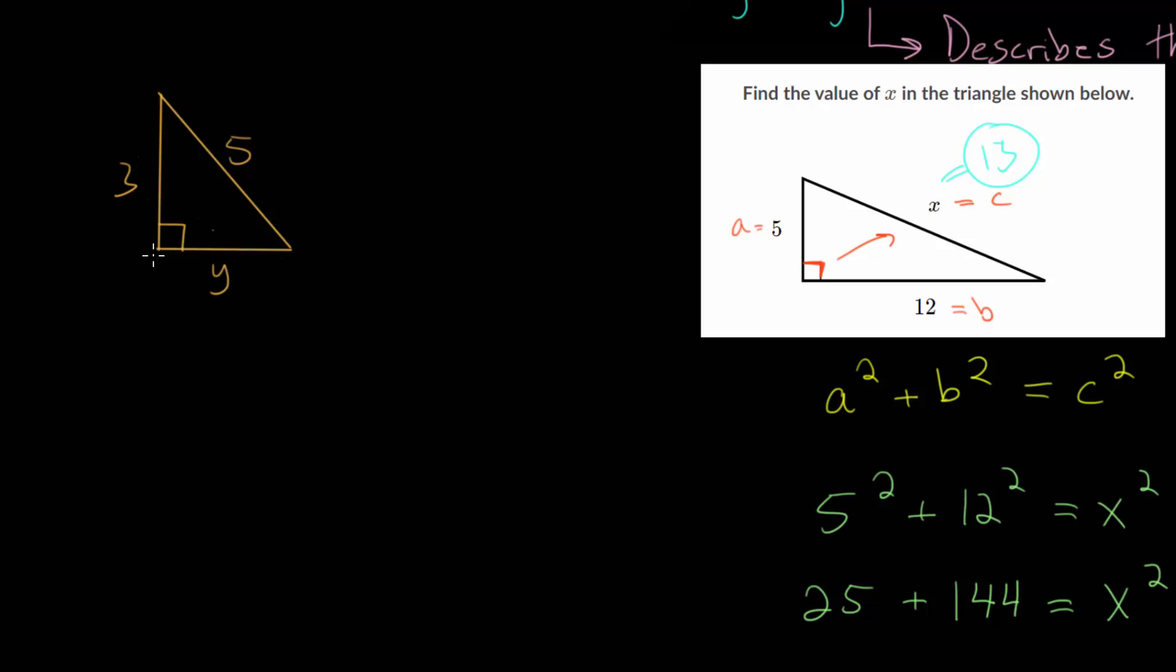So let's say this is 3, and we'll call this side Y. So the Pythagorean theorem can still be used on this triangle, even though now we know the hypotenuse.